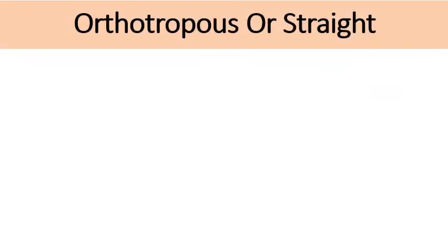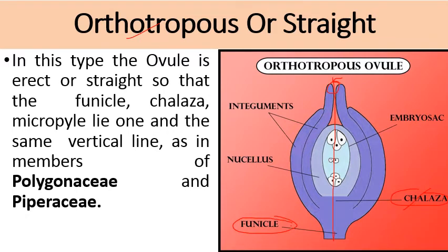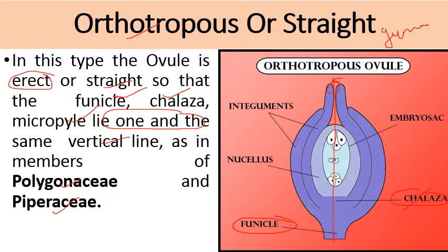The first type is the orthotropous or straight ovule, which is the most primitive ovule. In this type, the funicle, chalaza, and micropyle lie on a single straight vertical axis. The ovule is erect so that the funicle, chalaza, and micropyle all lie on one and the same vertical line. It is found in members of the families Polygonaceae and Piperaceae, and also in gymnosperms.